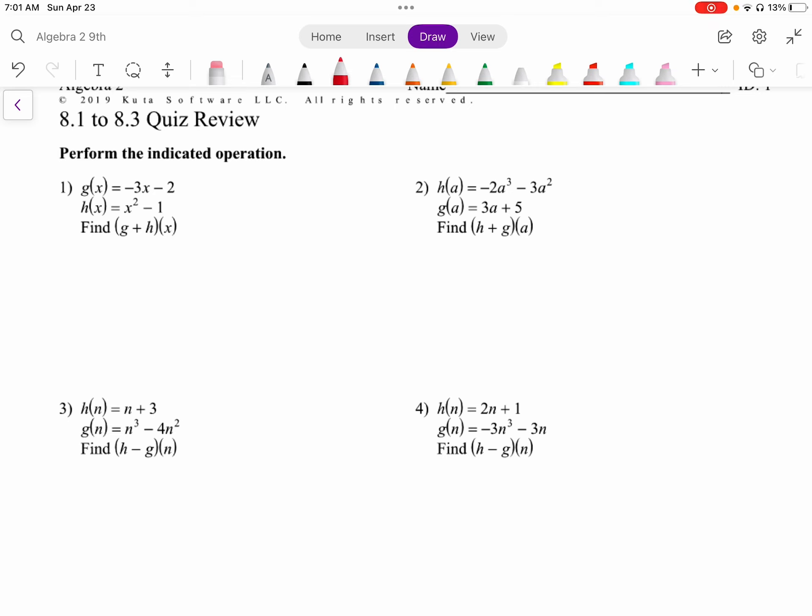So in number 1, it says find g plus h of x. This simply means we want to find g of x plus h of x. So we have negative 3x minus 2 plus x squared minus 1. And we just add like terms. So x squared is our largest exponent, and then we have minus 3x, and then we have negative 2 plus negative 1 is negative 3. That's all you have to do for addition.